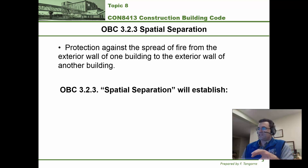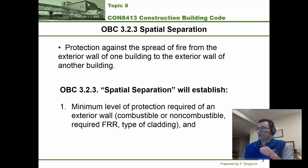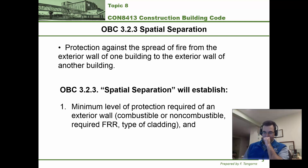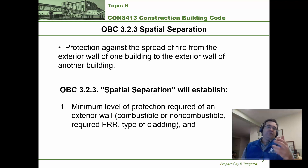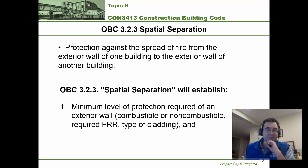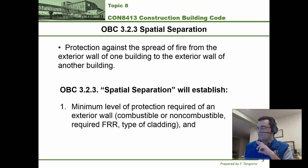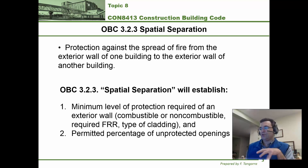This section will establish the minimum level of protection required in the exterior wall of the building under consideration. We're going to learn how to figure out whether the exterior wall has to be of combustible or non-combustible construction, what the minimum fire resistance rating needs to be of that exterior wall, and the type of cladding required. Cladding is the correct engineering term for the exterior skin of the building. We'll also establish the allowed amount of unprotected openings in that exterior wall.